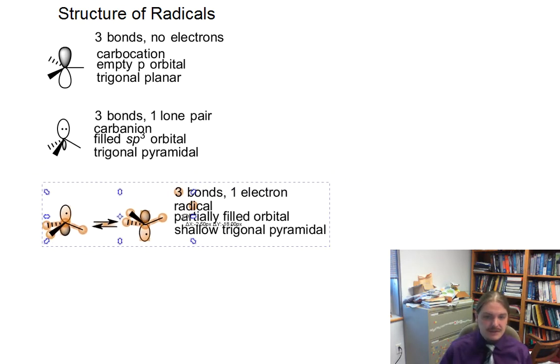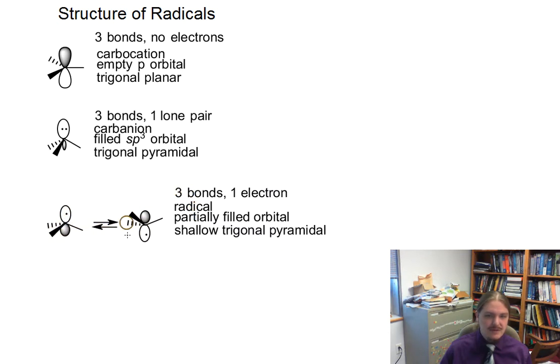The radical, which is a little bit different, has three bonds and one electron. You might expect it to be intermediate in structure between the trigonal planar carbocation and the trigonal pyramidal carbanion, and it is. It takes on a shallow trigonal pyramidal geometry. And it can interconvert, so it can flip back and forth. This is really only of consequence when we're talking about chirality, which we're not going to do very much, but it's an interesting thing that radicals can do.